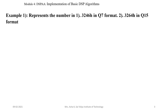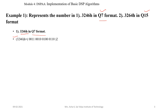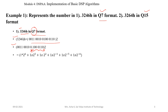Represent the following numbers in Q7 and Q15 format. The first number is 3246 hexadecimal in Q7 format. Consider 3246 with the help of 8421 code representation, and convert each hexadecimal digit into binary. After conversion of hexadecimal to binary in 4-bit representation, since it is Q7 format, place a decimal point after 7 binary bits, then convert into decimal representation using the weightage and powers of 2.